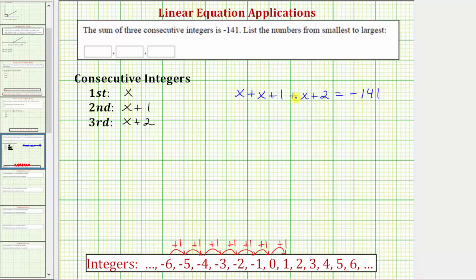Let's simplify the left side of the equation. x plus x plus x equals three x, and one plus two equals three, so the left side simplifies to three x plus three, and this equals negative 141.